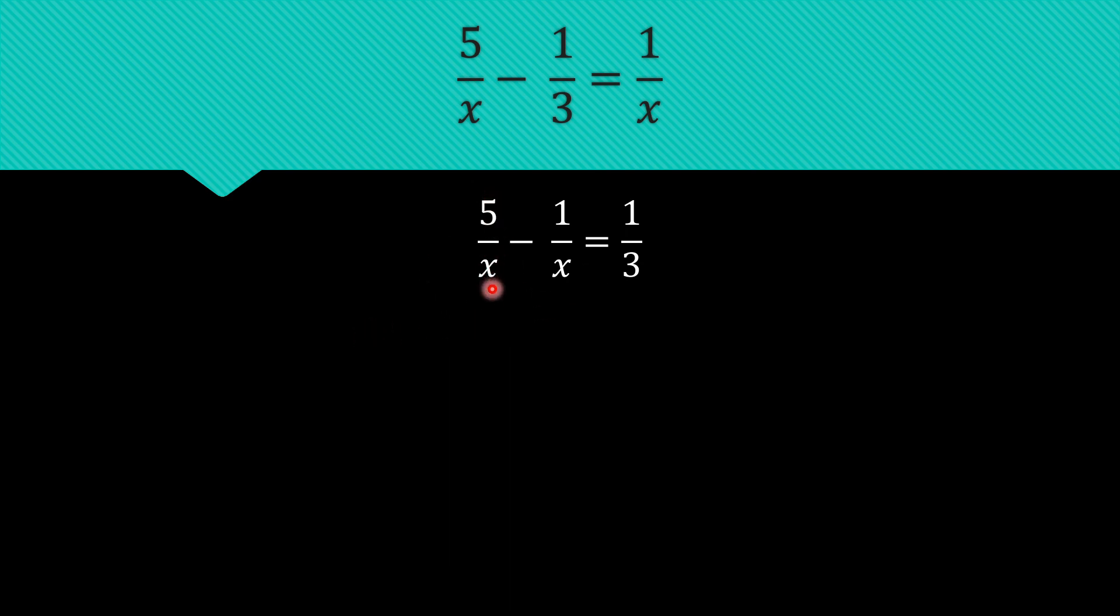Now, 5 over x minus 1 over x already have the same denominator. So combining these terms wouldn't be difficult. 5 over x minus 1 over x becomes 4 over x equals 1 third.